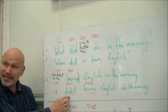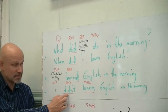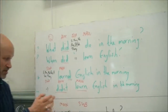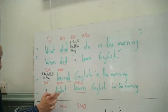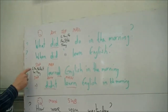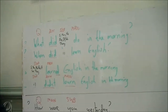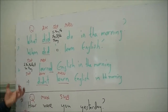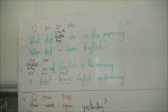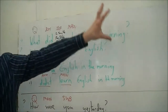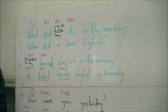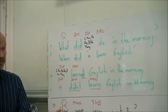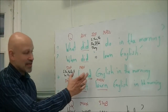Negative sentence: the auxiliary verb comes in, so the main verb is always present simple first person. The auxiliary verb is the same no matter what you use — I, you, he, she, it, we, or they. 'I didn't learn English in the morning. She didn't learn English in the morning.' In my view, the past is even simpler in a way than the present. But here's the challenge.